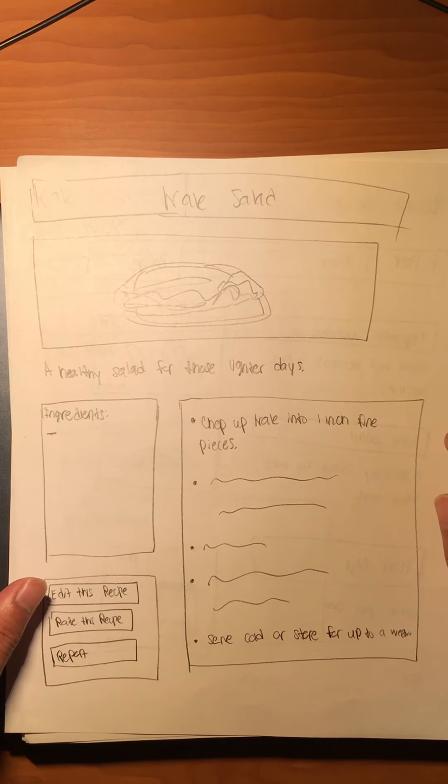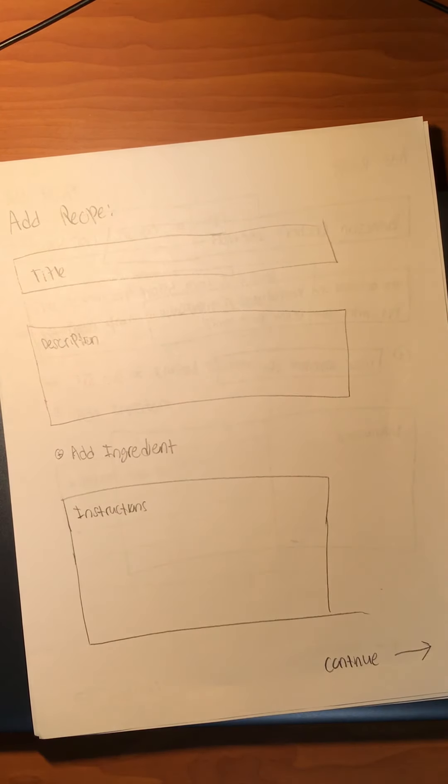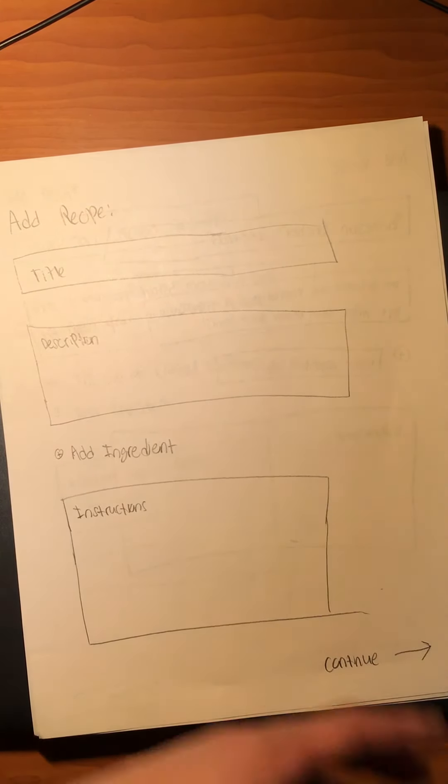If they edit it, they can change the features and save it for themselves. Or if they go back to the main menu and decide to create a recipe instead, they'll be prompted by an add recipe screen with text boxes and input fields for the title, description, ingredients, and instructions.